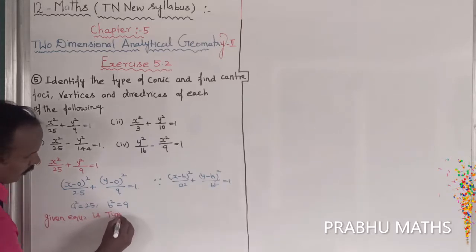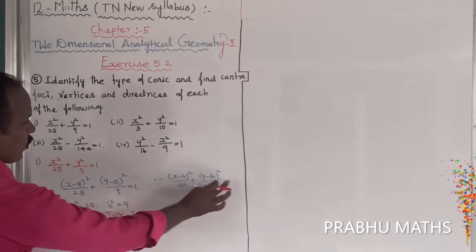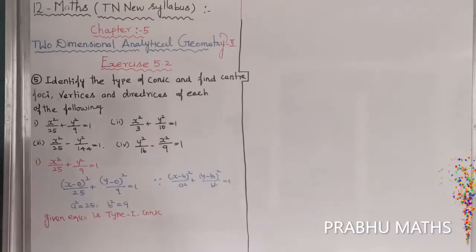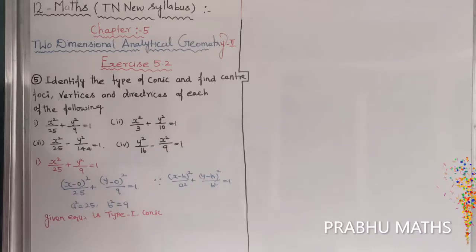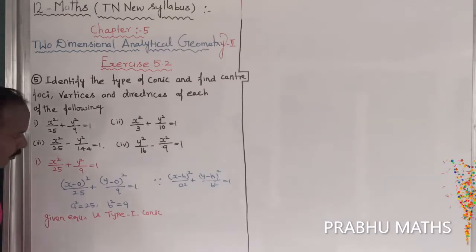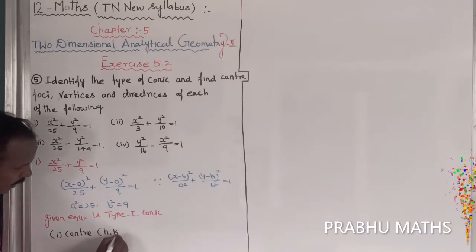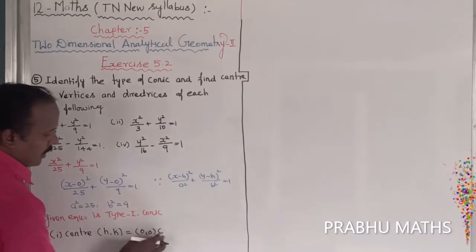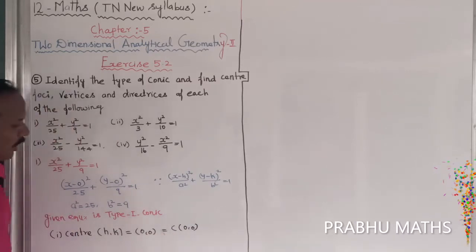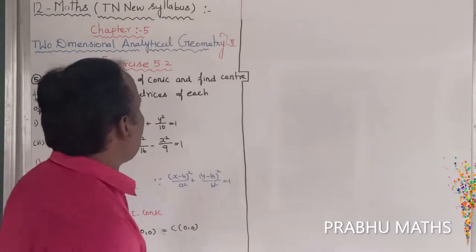The given equation is Type 1. This is Type 1 conic because x squared by a squared plus y squared by b squared equals 1 is the Type 1 conic. Next, to find the center: center (h, k) is equal to (0, 0). So the center C is (0, 0), meaning h equals 0 and k equals 0.